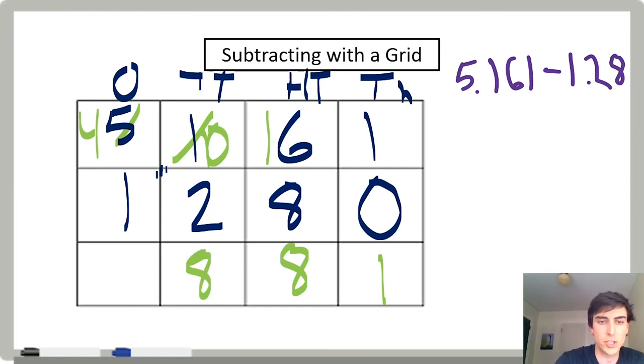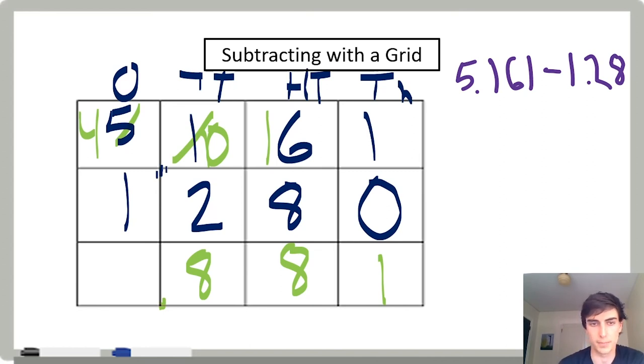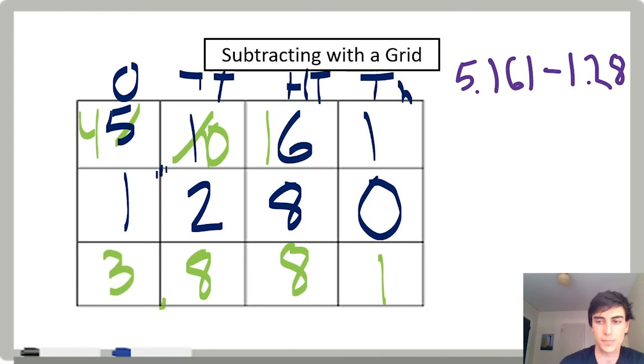Make sure I put the decimal here so I don't forget it. Four ones minus one one is three ones. That's how we can subtract decimals with a grid.